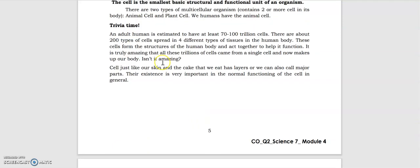Let's have first history. An adult human is estimated to have at least 70 to 100 trillion cells. There are about 200 types of cells spread in four different types of tissues in the human body. These cells form the structures of the human body and act together to help its function.